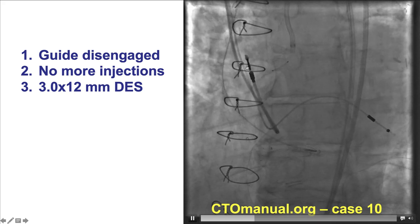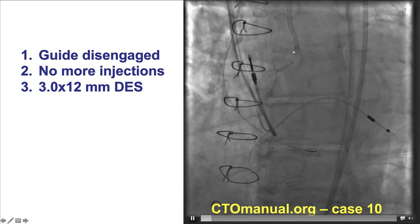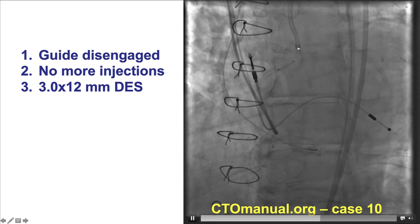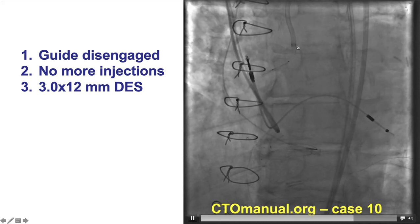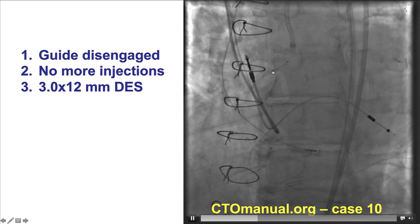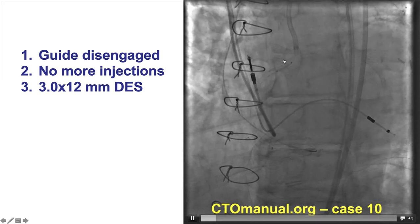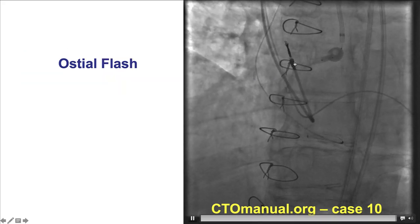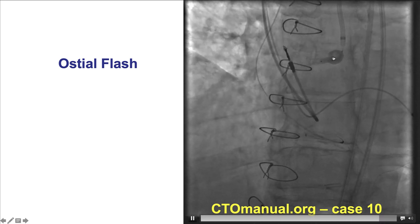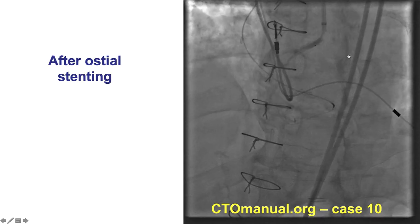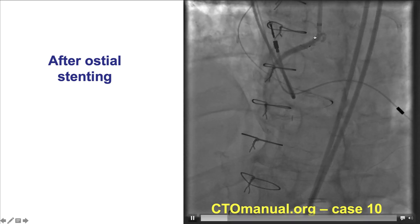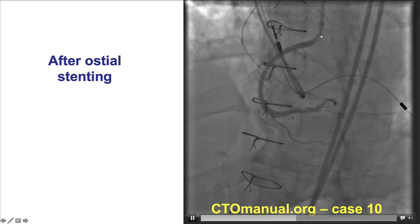Once again, the therapy was to stop injecting. The Amplatz guide was disengaged while maintaining wire position, which can be tricky sometimes because by pulling back the guide, the wire may come out as well. Fortunately, in this case, we were able to deliver the stent first, then carefully back the guide out, then deploy the stent covering the ostium of the vessel. Then, an ostial flare balloon was used to flare the aorto-ostial stent at the ostium of the vessel, and this provided a nice result. We're injecting very cautiously at this point, with the guide being disengaged essentially from the vessel ostium.